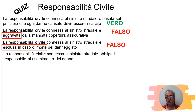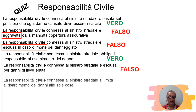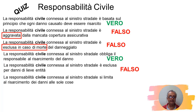La responsabilità civile obbliga i responsabili al risarcimento del danno – è corretto. 'È esclusa per danni di lieve entità' – no, anche un danno di poche centinaia di euro va pagato. 'Si limita il risarcimento del danno alle sole cose' – falso, abbiamo detto anche alle persone e agli animali. Quindi se leggo 'solo alle cose', è una risposta falsa.